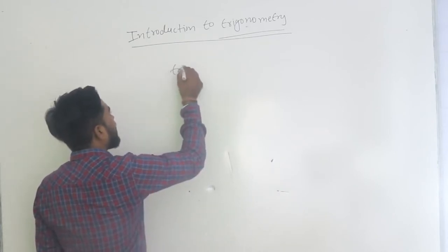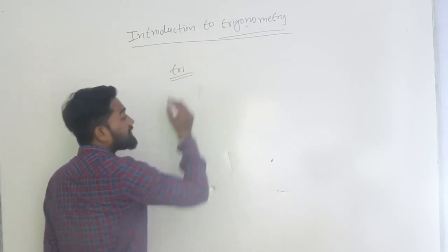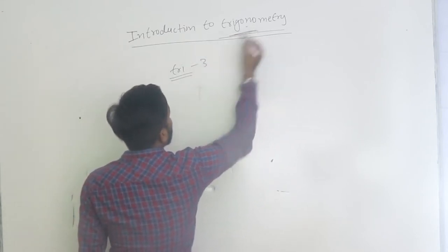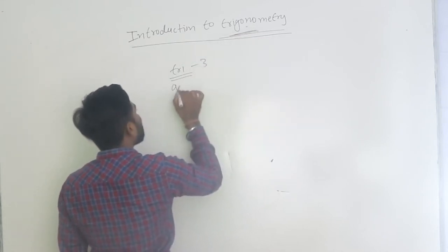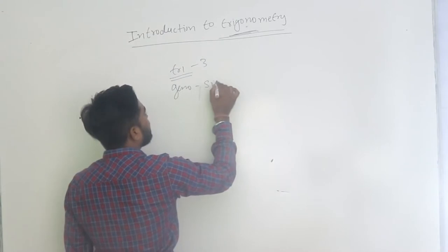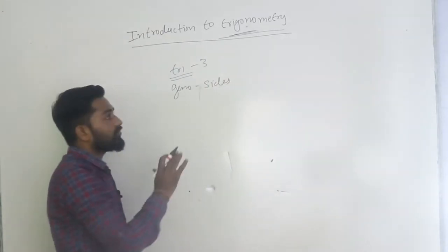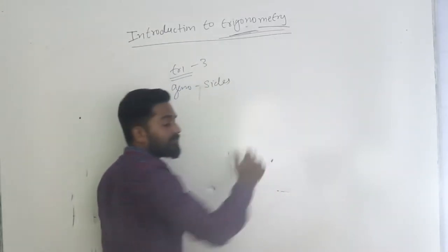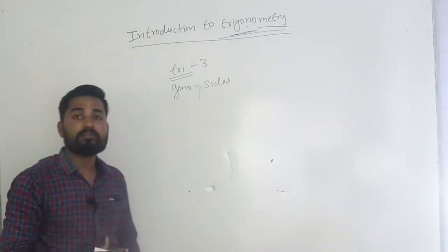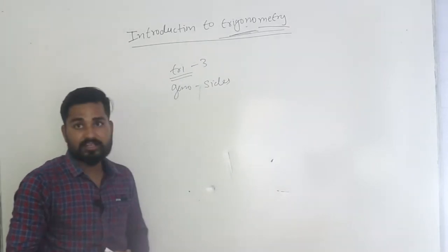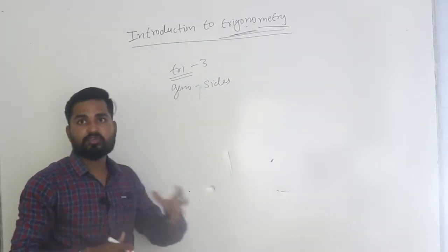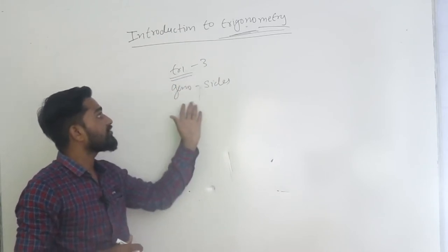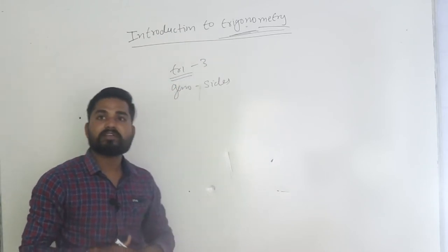Trigon is like tri — tri means three. Gono means sides, so trigono means three sides. And then metri means measure. So trigonometry is a Greek word where tri means three, gono means sides, and metri means measurement.